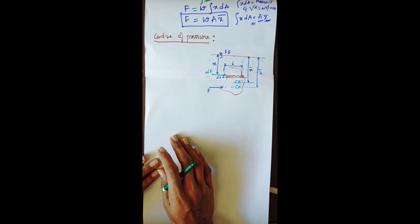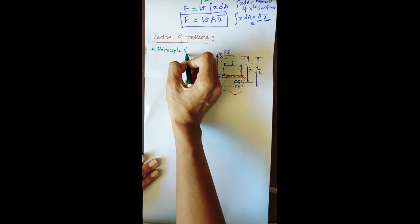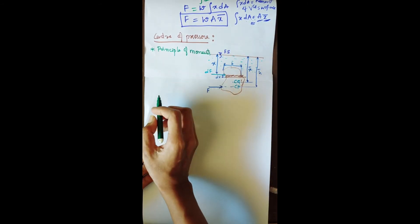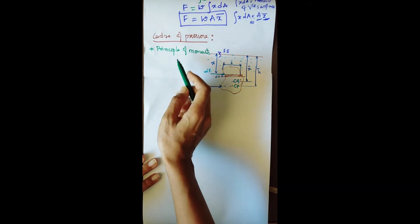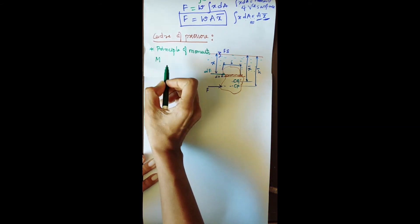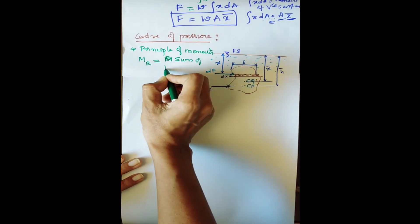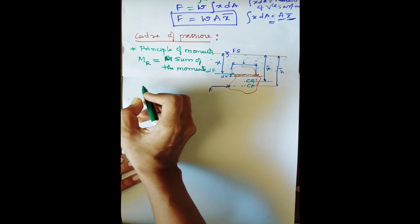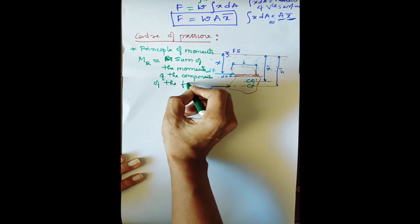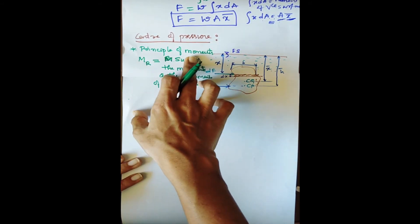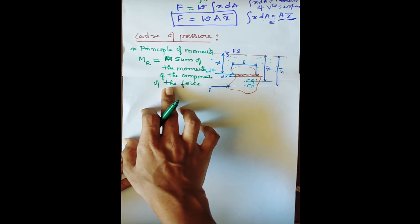Next is the center of pressure for a vertical plane surface. The center of pressure is calculated using the principle of moments, which states that the moment of the resultant force equals the sum of the moments of the component forces. We apply this principle to find the center of pressure.